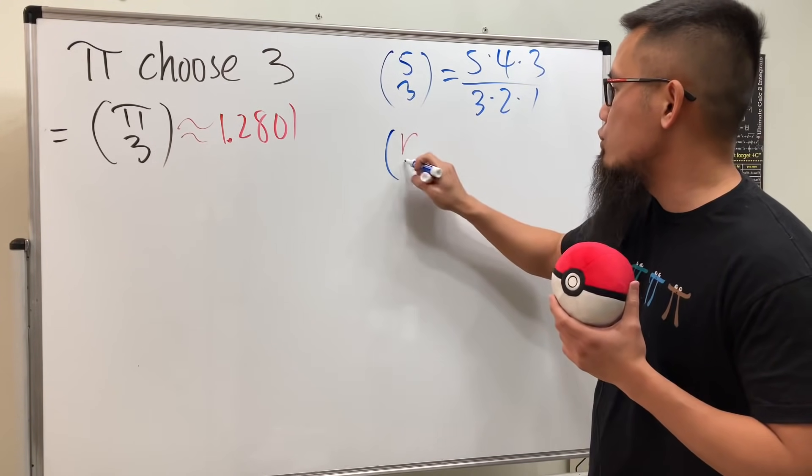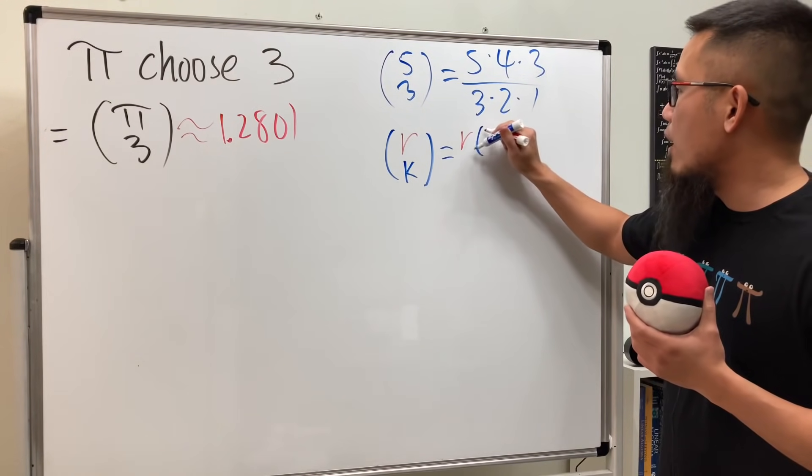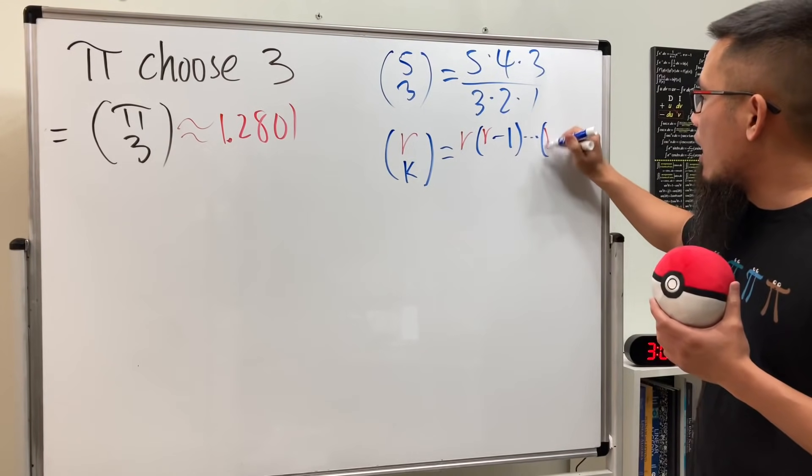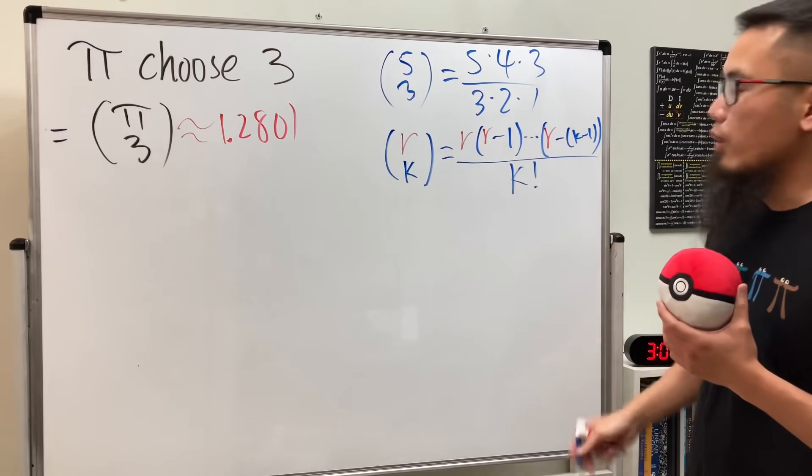And the idea is that if you have any real number right here, you can do the following. Let's say we have r choose k like this. Well we start with r, and then you go down and you have the r minus one, and then you go down and you stop at r minus k minus one like so, and you divide it by k factorial.